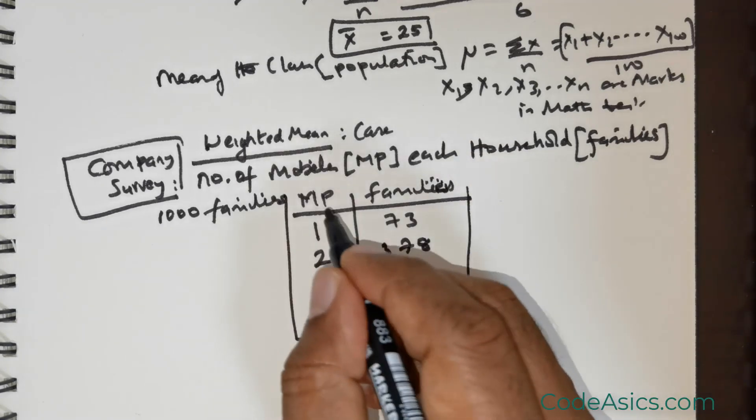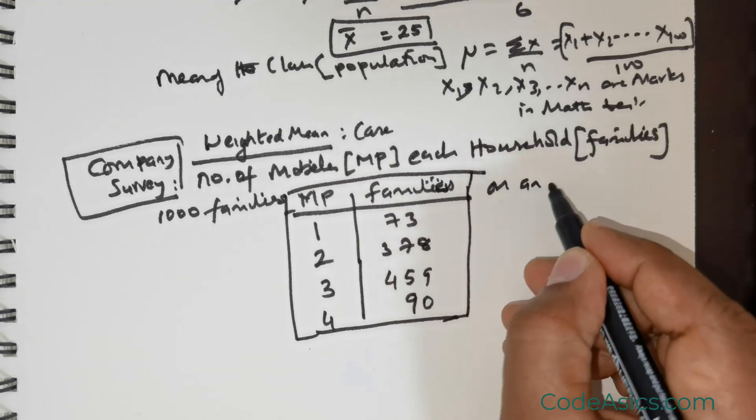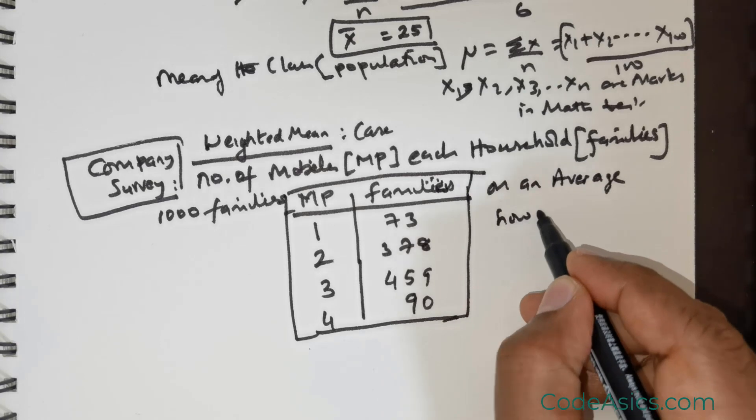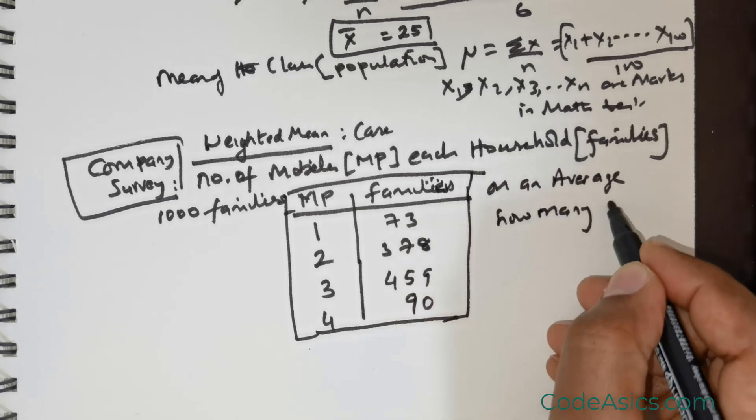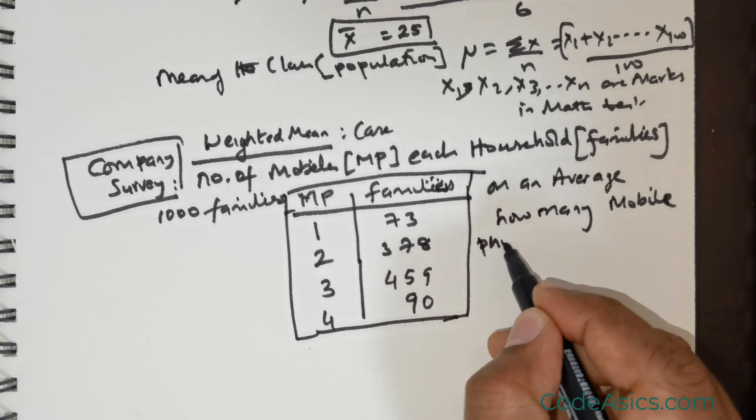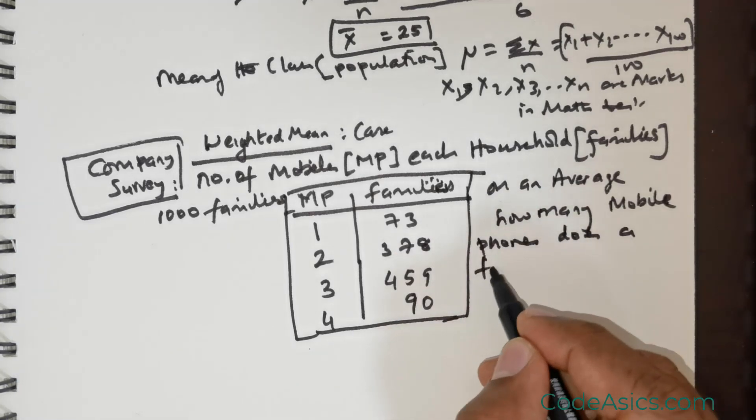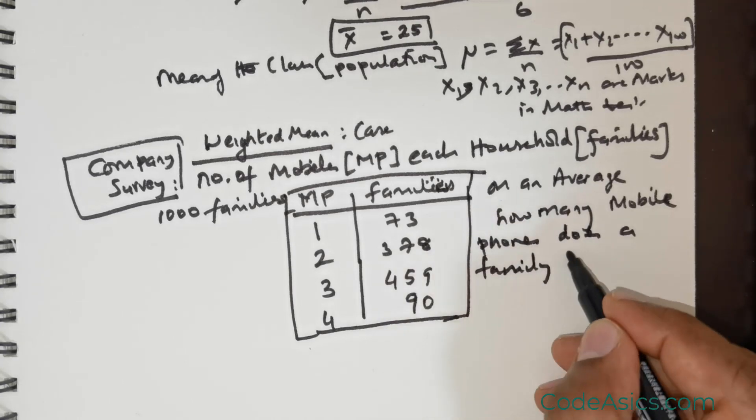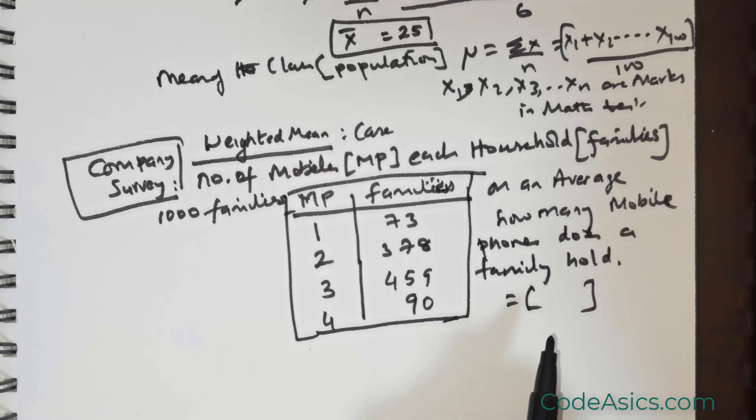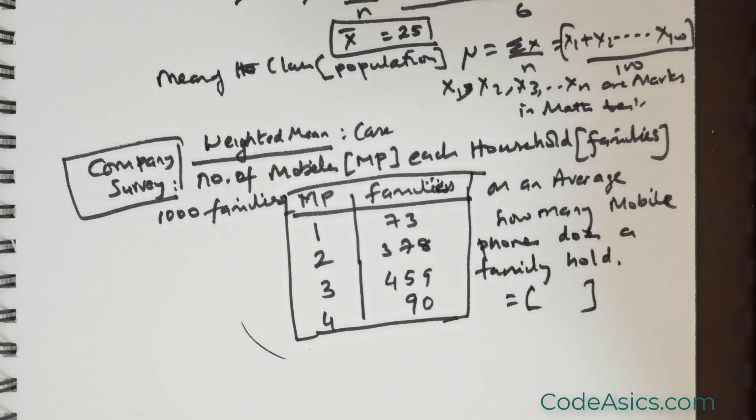Now the most important question is: on average, how many mobile phones does a family hold? You need to come out with one number that should represent this entire data that we have here.